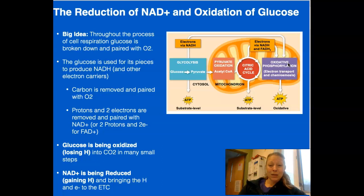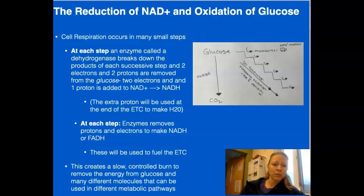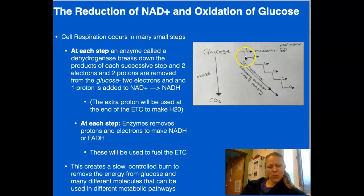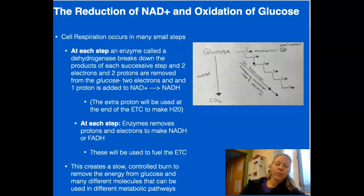So those are the big ideas: making carbon dioxide and breathing it out, and making NADH electron carriers and shipping them to the electron transport chain. Glucose is oxidized into carbon dioxide through a series of steps — this creates a slow, controlled burn. Otherwise we'd burn up like a match, because cell respiration is very similar to a combustion reaction, just more controlled. We have enzymes that make each step happen.